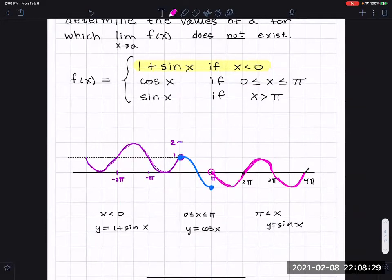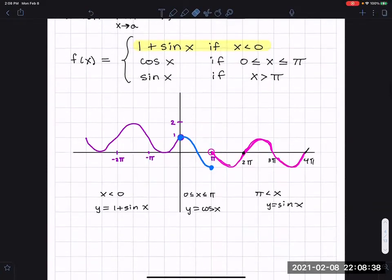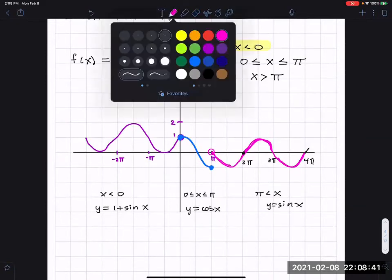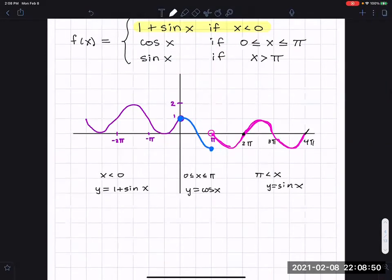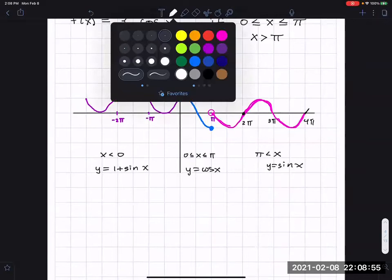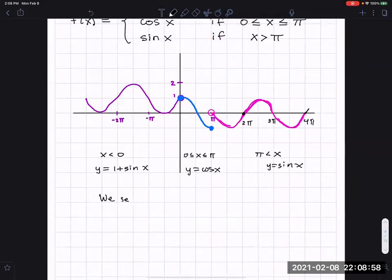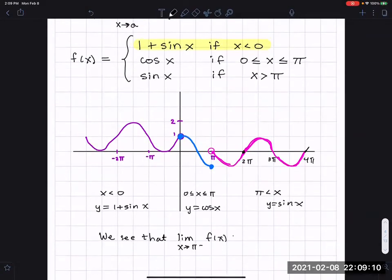Now where does the limit not exist and why? I'll erase this part there. Where does the limit not exist and why doesn't it exist? Well. Anybody want to speak up? I'll just speak up. Do you see where there's a jump? We see this jump at pi. We see that the limit as x approaches pi from the left of our function is equal to negative one.